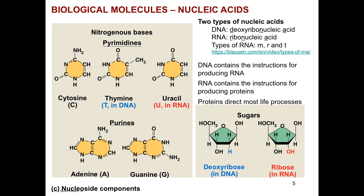RNA has the ribose sugar. In the second position, carbon two prime on the sugar, there's a hydroxyl group, whereas in DNA there is just a hydrogen — no hydroxyl group. That's why it's called deoxy, because there's an oxygen in the hydroxyl. So they call it ribose and then deoxyribose, because in the deoxyribose the two prime position has a hydrogen instead of a hydroxyl.